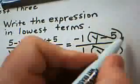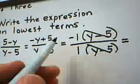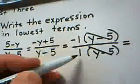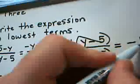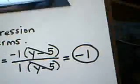So we cancel out the y minus 5's. Those are common factors from top and bottom. A negative 1 divided by a positive 1 becomes a negative 1. And that's my answer to part A.